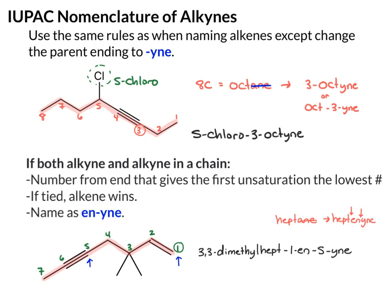Now, one other thing: if you happen to run into a tie where both the double bond and the triple bond are the same distance away, the alkene wins. To show an example of that — if you had a structure where, no matter which end you numbered from, your first unsaturation would be at carbon two, then the alkene wins over the alkyne. And that would be your correct numbering scheme.